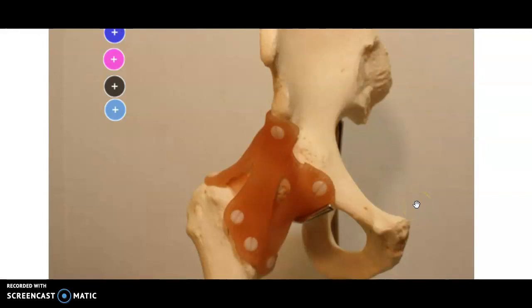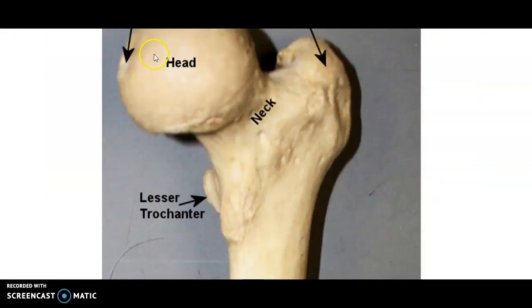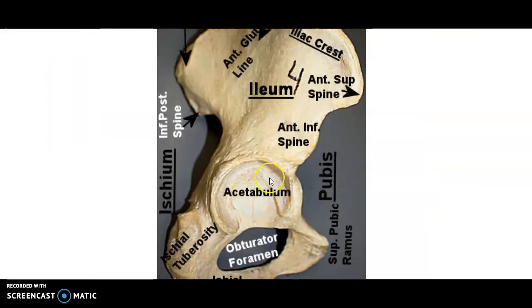Back to our hip and the main ball and socket joint. We have the round head of the femur. See the nice round head. It's going to fit into the acetabulum. There's actually a ligament holding the head in place right there, which we're not going to talk about.